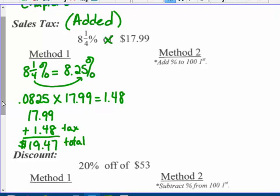Method two: since I know I'm going to be paying that 8.25% tax, I'm also going to be paying all 100% of that $17.99. So you could add the tax amount to 100% of the cost.